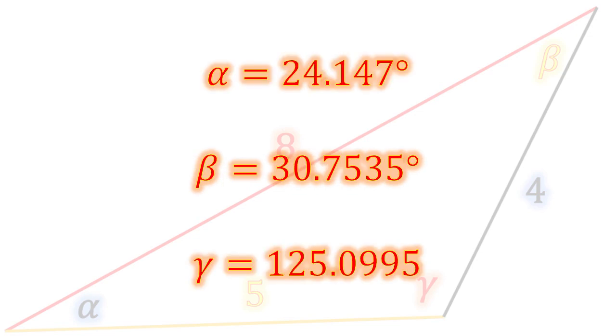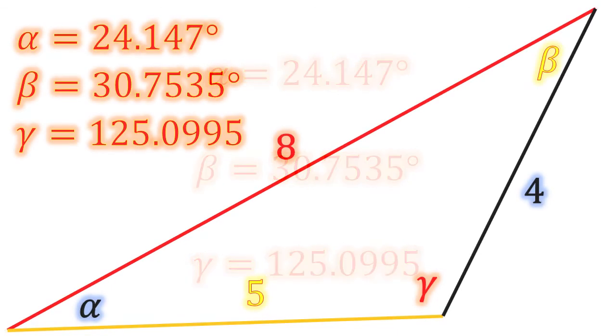So we now have our degree angles. I left the degrees off of gamma and I ain't going to do the slide again, so if it bothers you, take a snapshot and draw in a little circle. Okay, so essentially we now have solved our triangle. We have a 4-5-8 triangle with interior angles of 24, 31 and 125 degrees respectively for alpha, beta, and gamma.